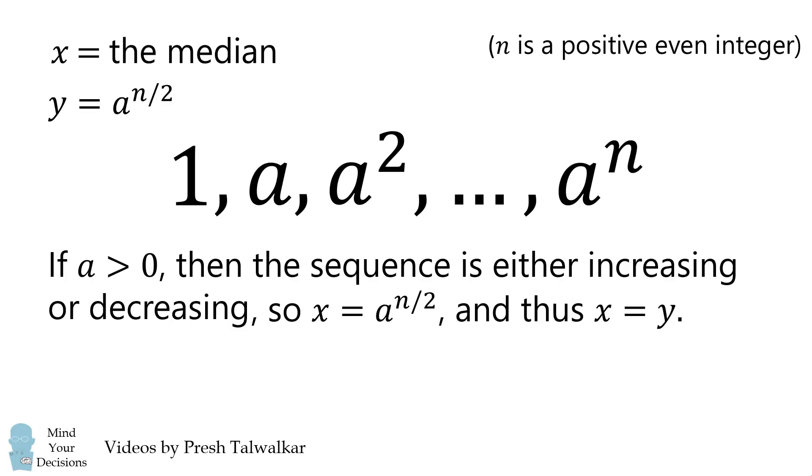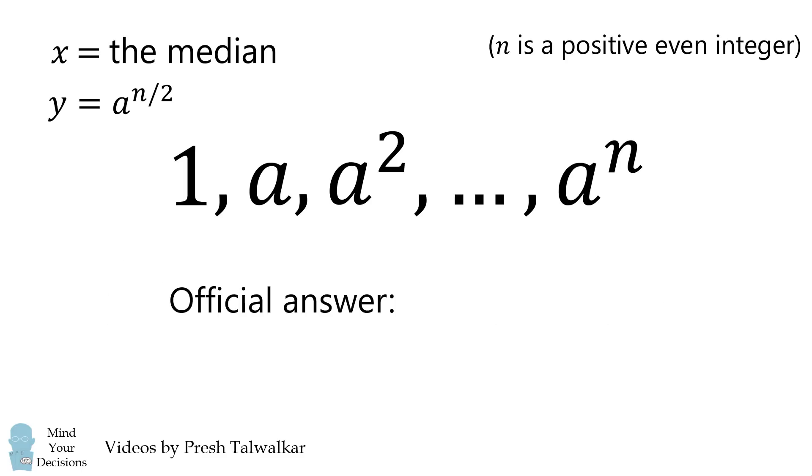Therefore, x is always equal to y if a is greater than 0. The official answer to this problem did say that x is equal to y. However, it's an incomplete answer. It is not the correct answer.